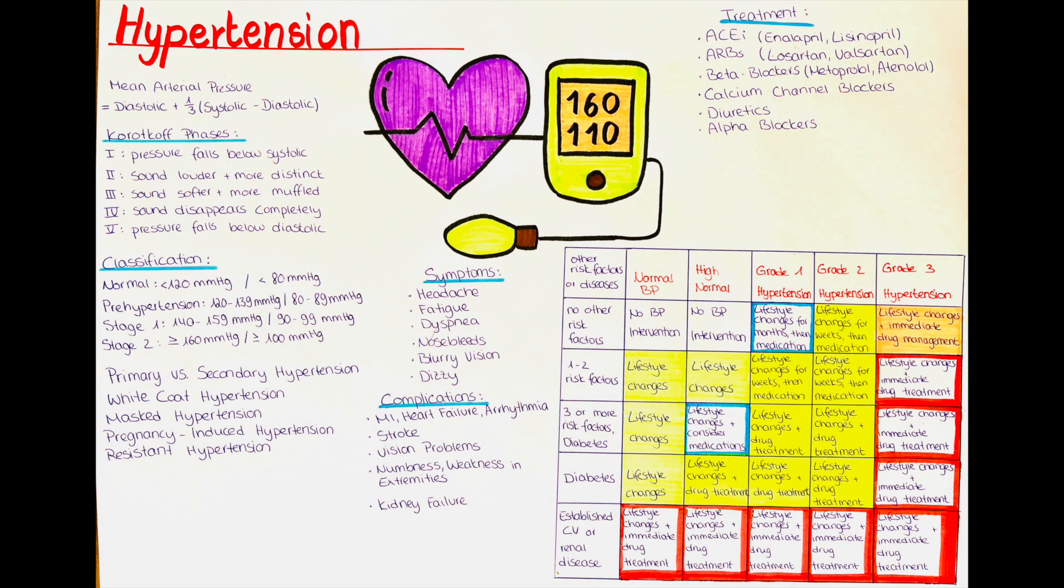Another type of hypertension is pregnancy-induced hypertension. This type of hypertension occurs during pregnancy. If you want to know more about hypertension in pregnancy, we have a separate video on that in our gynecology playlist.